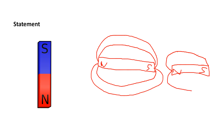Now, what these lines signify — these lines signify the magnetic lines of force. It means that magnetic lines are emitting from one pole and entering into another pole.